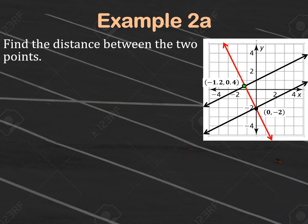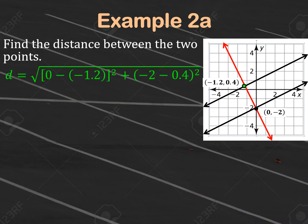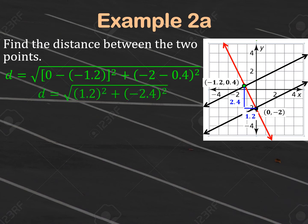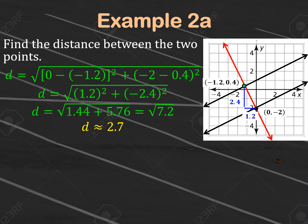Now we find the distance between the point (0, −2) and the intersection point (−1.2, 0.4) using the distance formula: √((x₂ − x₁)² + (y₂ − y₁)²). You can also build a right triangle — the base is 1.2 units (from x = 0 to x = −1.2) and the height is 2.4 units (from y = −2 to y = 0.4). So the distance = √(1.2² + 2.4²) = √7.2 ≈ 2.7. To summarize: find the perpendicular slope, write the perpendicular line equation, find the intersection with the other parallel line, then apply the distance formula.